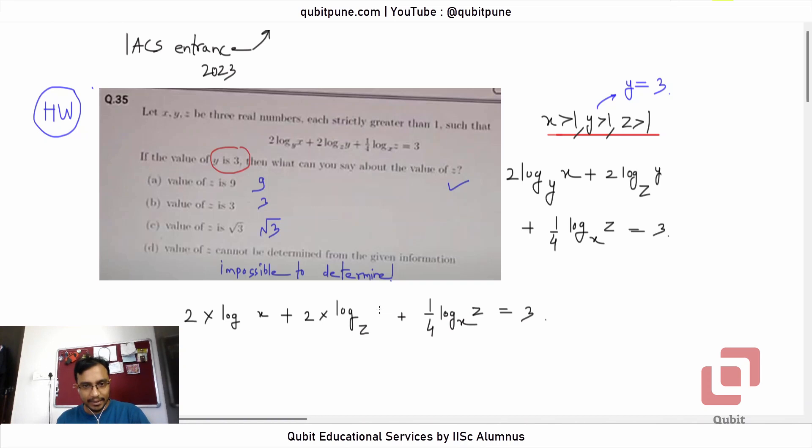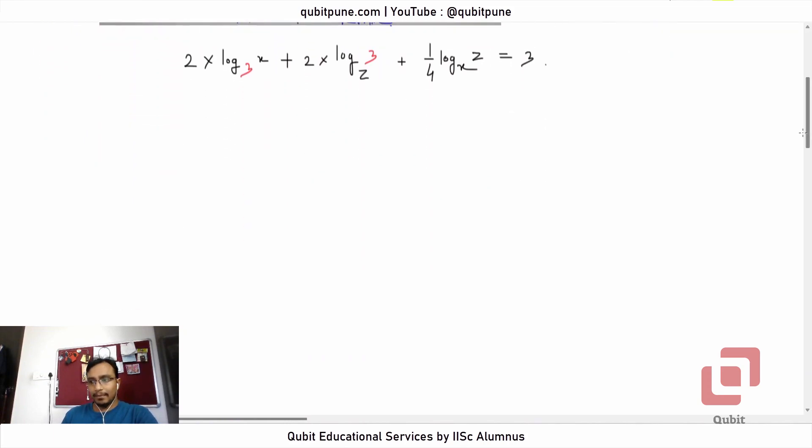Wherever I see y, I can change it to 3. What can you say about the value of z: 9, 3, root 3, or impossible to determine? Now look, we only have one equation with us.